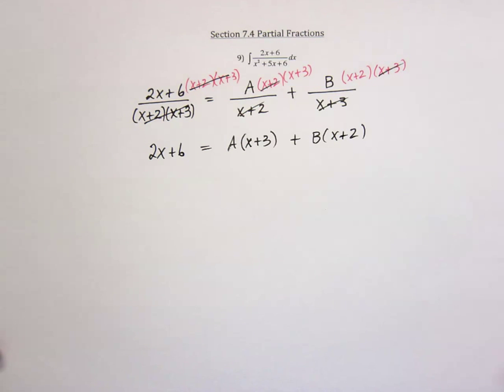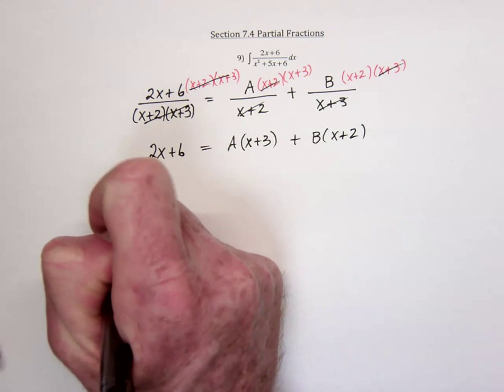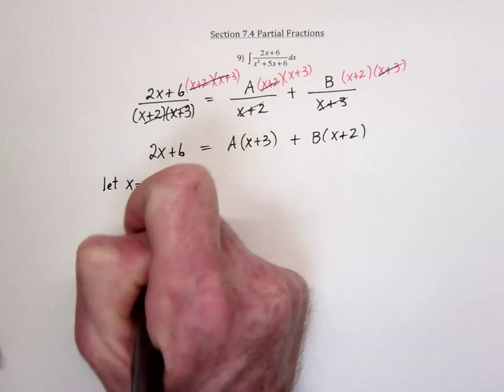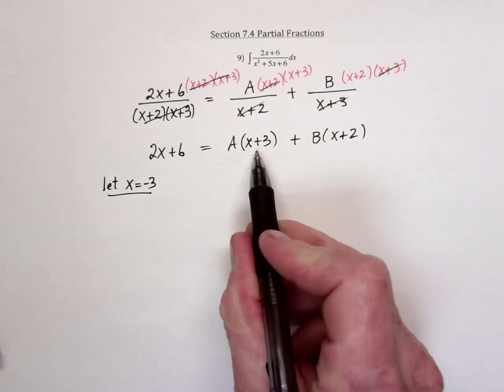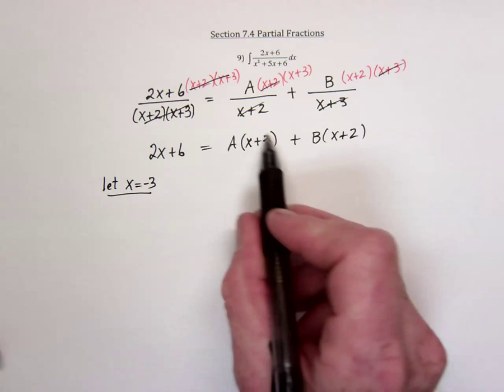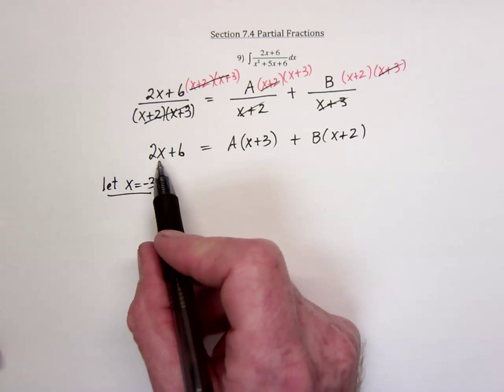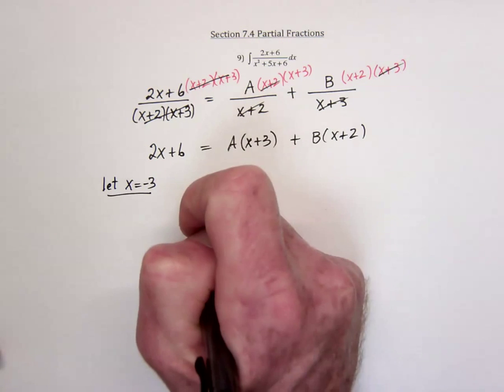Now, you can pick numbers for x. Like, let x equal negative 3. So I'm choosing negative 3, so that it'll actually cancel this term. So if you use negative 3, this is going to be negative 6, and positive 6 is 0.